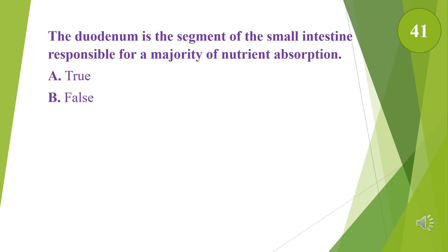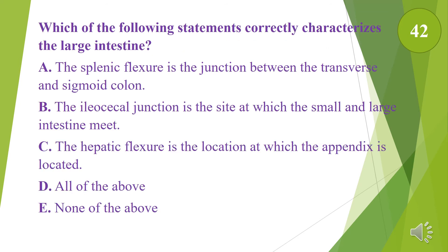True or false: the duodenum is the segment of the small intestine responsible for a majority of nutrient absorption. That is false. Which of the following statements correctly characterizes the large intestine? A. The splenic flexure is the junction between the transverse and sigmoid colon. B. The ileocecal junction is the site at which the small and large intestine meet. C. The hepatic flexure is the location at which the appendix is located. D. All of the above. E. None of the above. The answer is B.